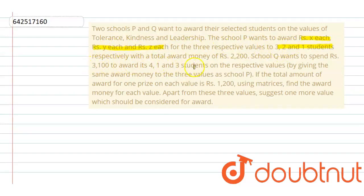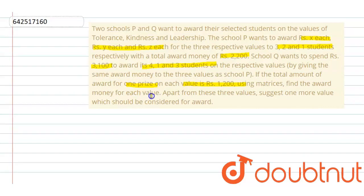Students, respectively, with a total award money of Rs. 2200. SchoolQ wants to spend Rs. 3100 to award its students on the respective values by giving the same award money to the three values as SchoolP. If the total amount awarded for one prize on each value is 1200, using matrices, find the award money for each value. Apart from these three values, suggest one more value which should be considered for award.